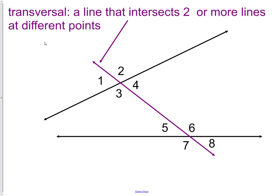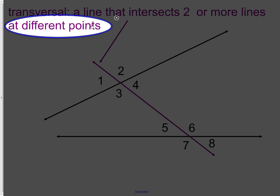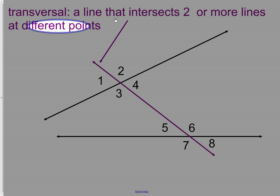A transversal is simply a line that intersects two or more lines at different points. The key part here is the at different points part. It has to cross two lines at two different points.